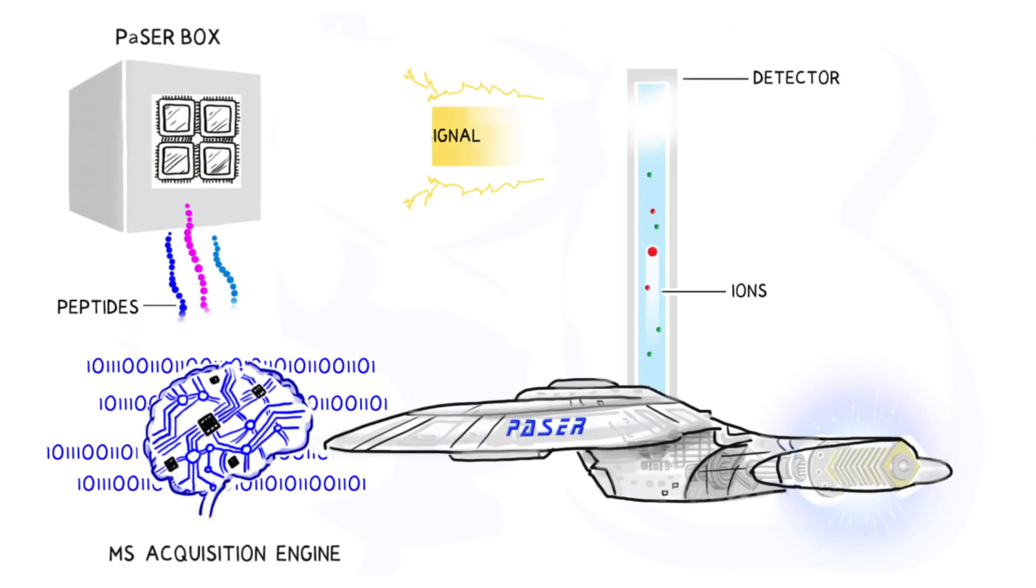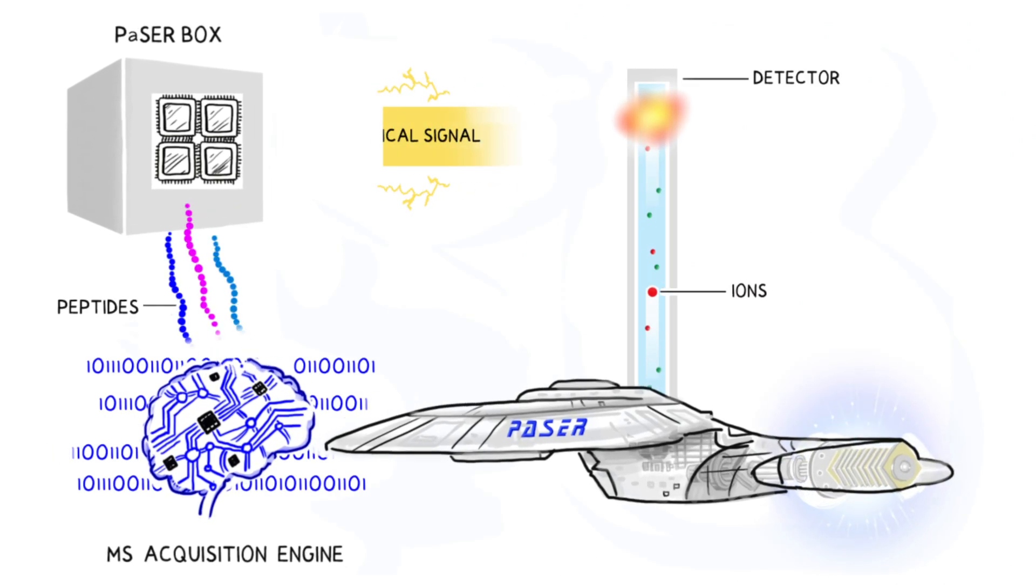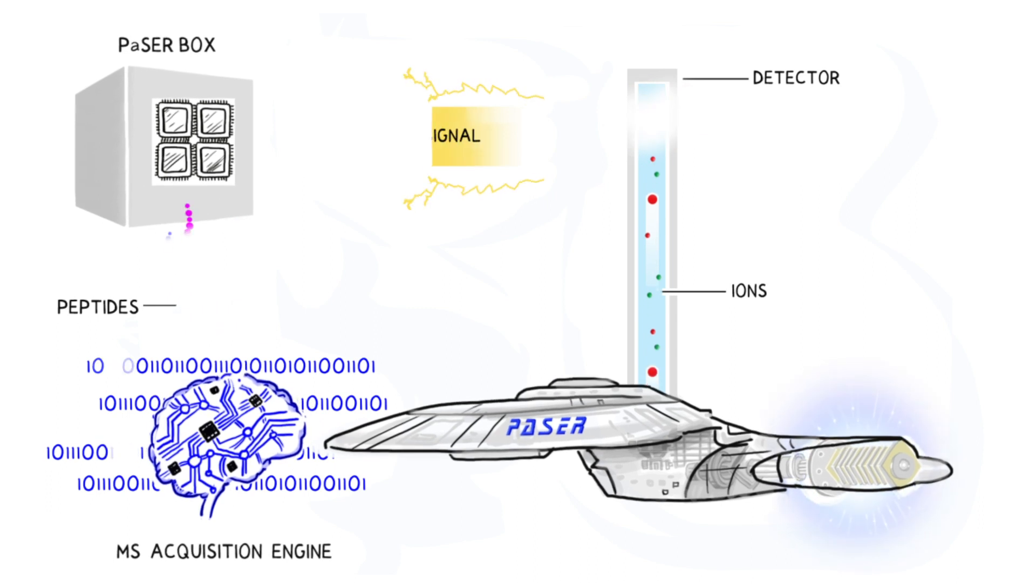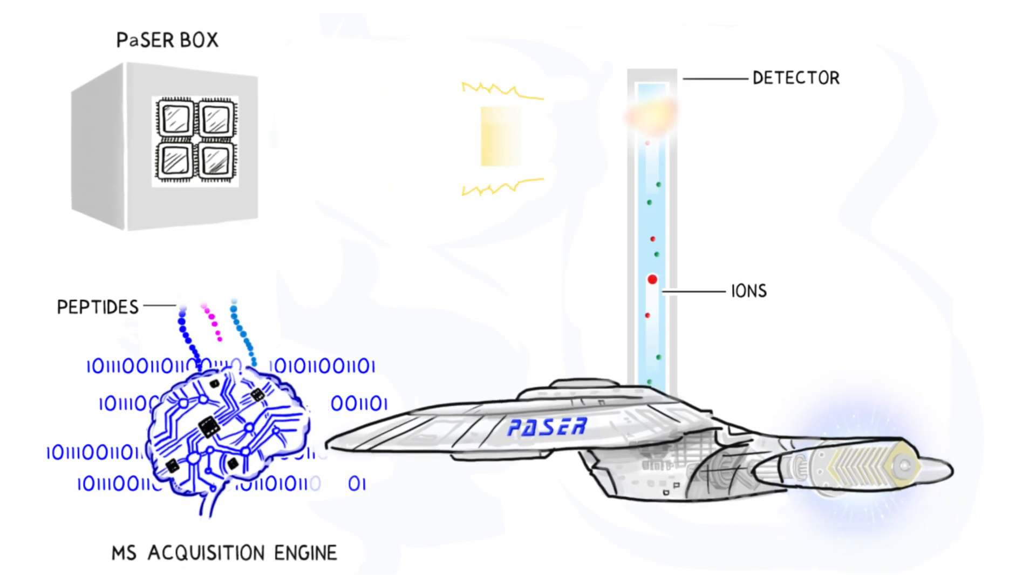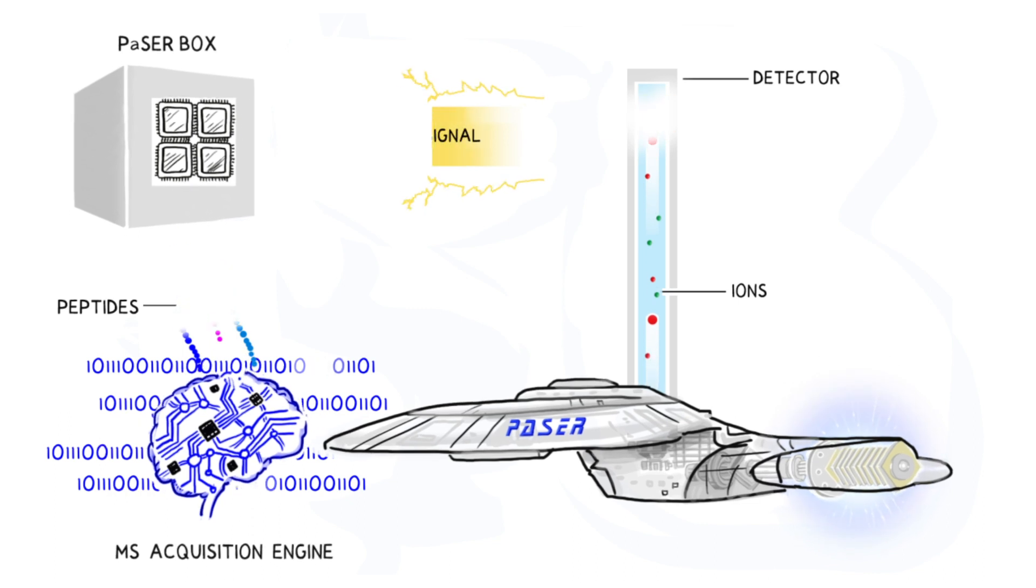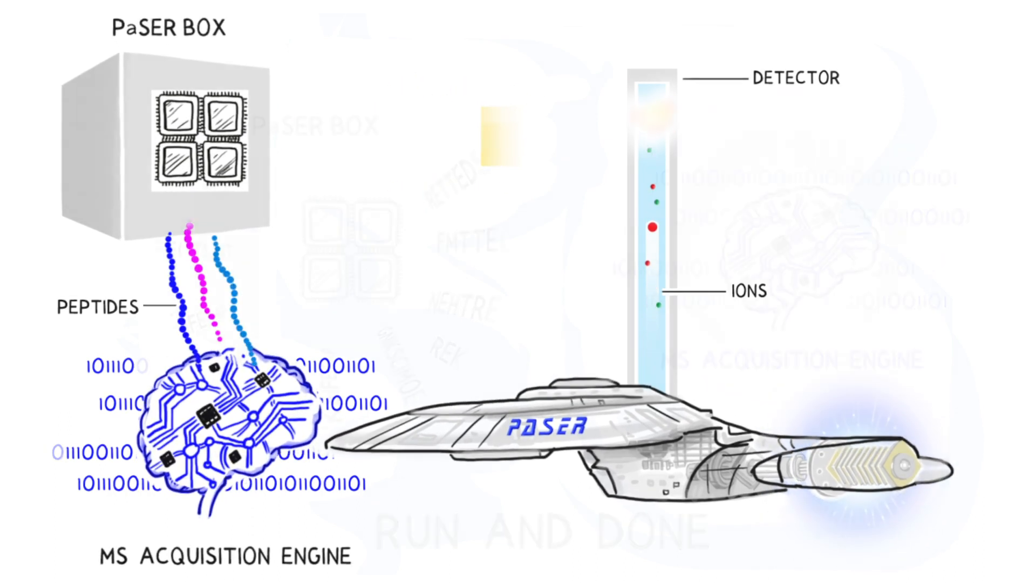How does it work? First, ions are detected. Then PACER assigns peptide sequences in less than 5 milliseconds by harnessing the power of modern GPU chips and massively parallel computations.